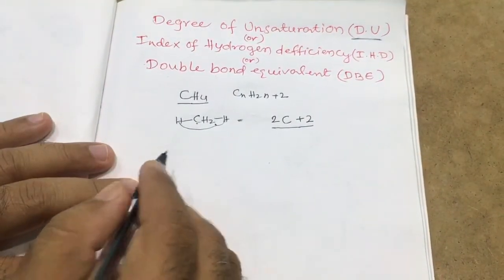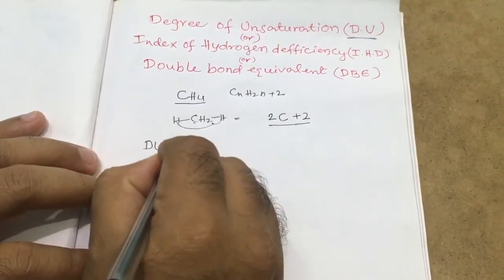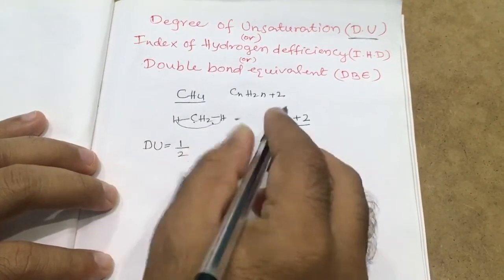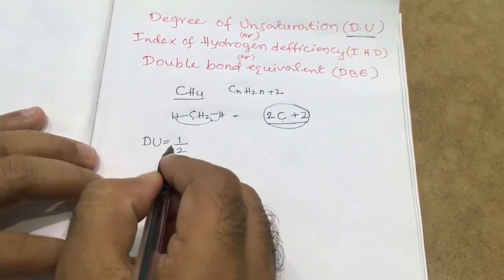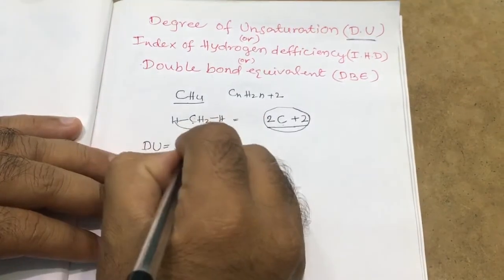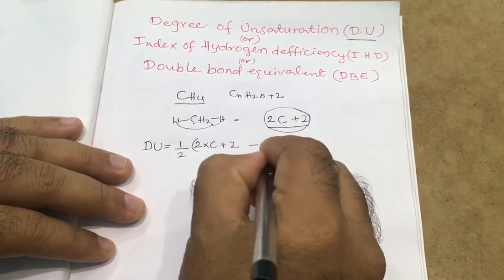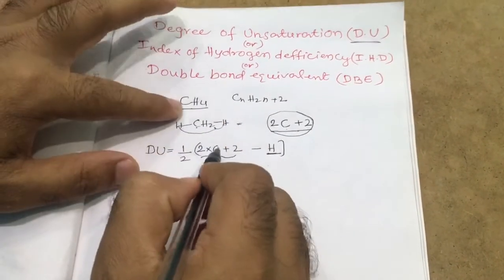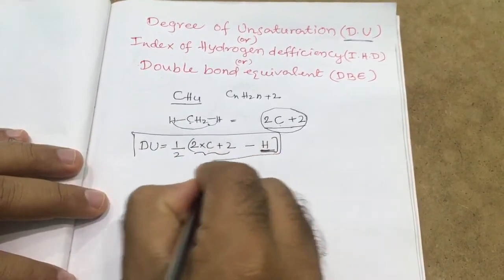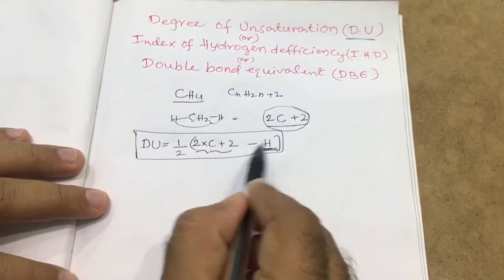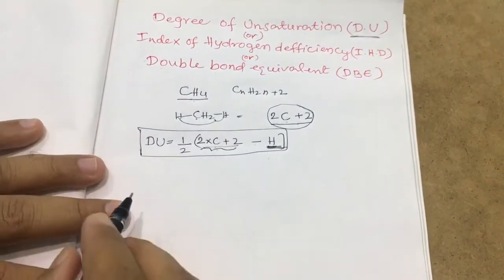This is nothing but a hydrocarbon. The deficiency — how to calculate — is: the formula for degree of unsaturation equals half the difference between the maximum number of hydrogens (2C+2) and the actual number of hydrogens. So DU = ½(2C+2 − H), where (2C+2) is the maximum number of hydrogens and H is the actual number.